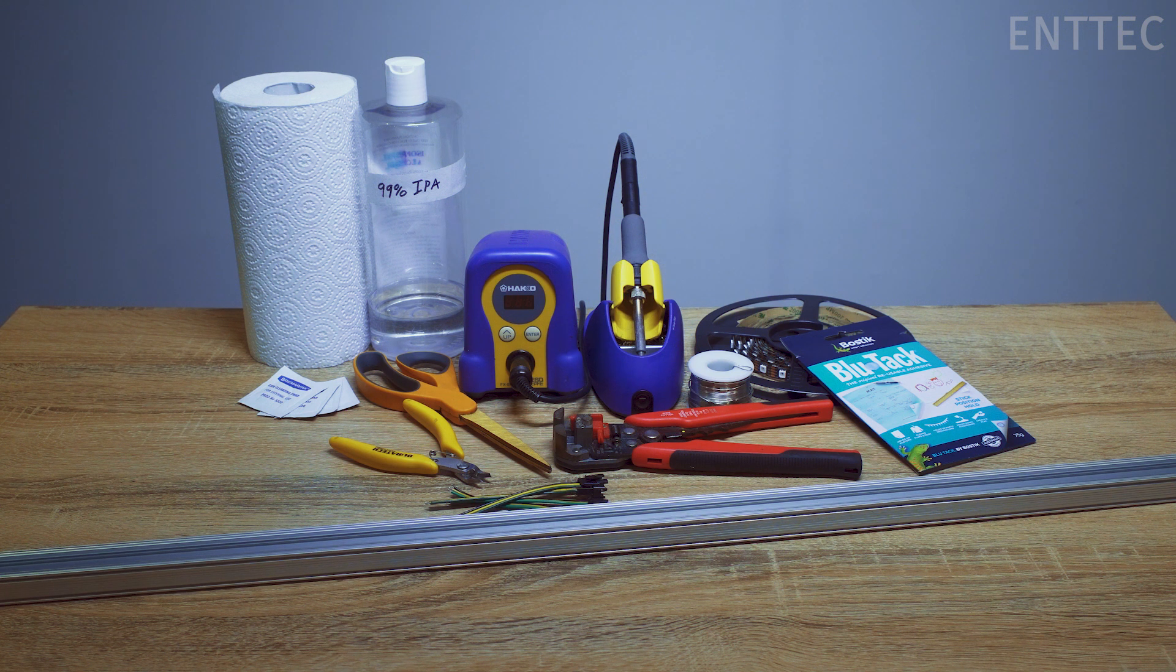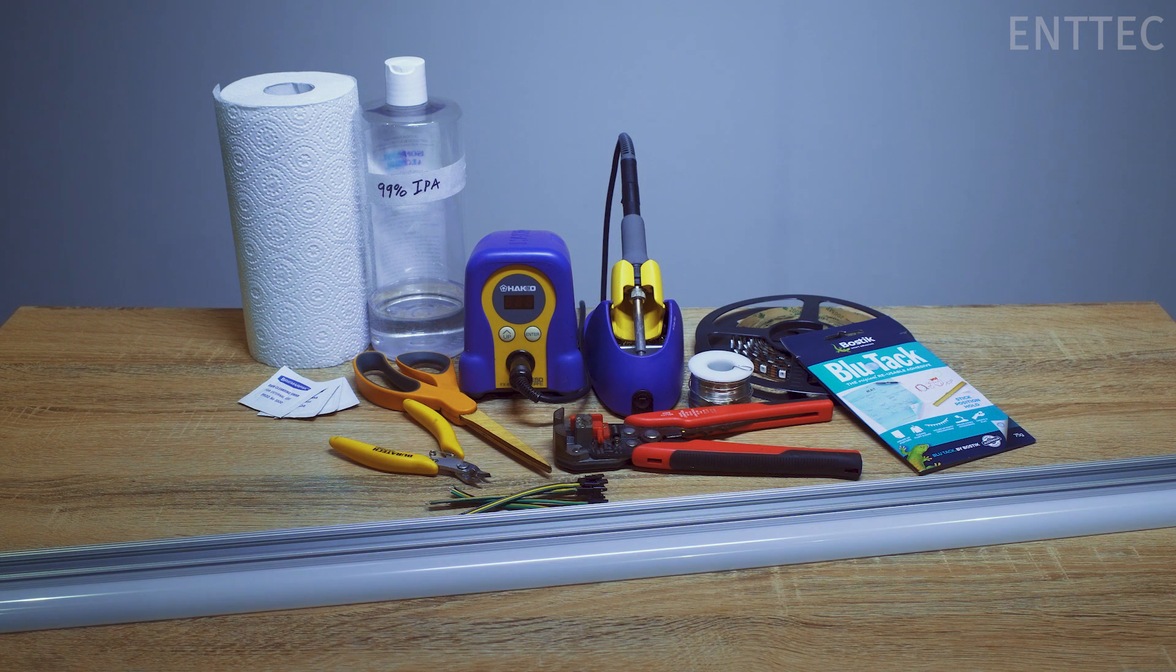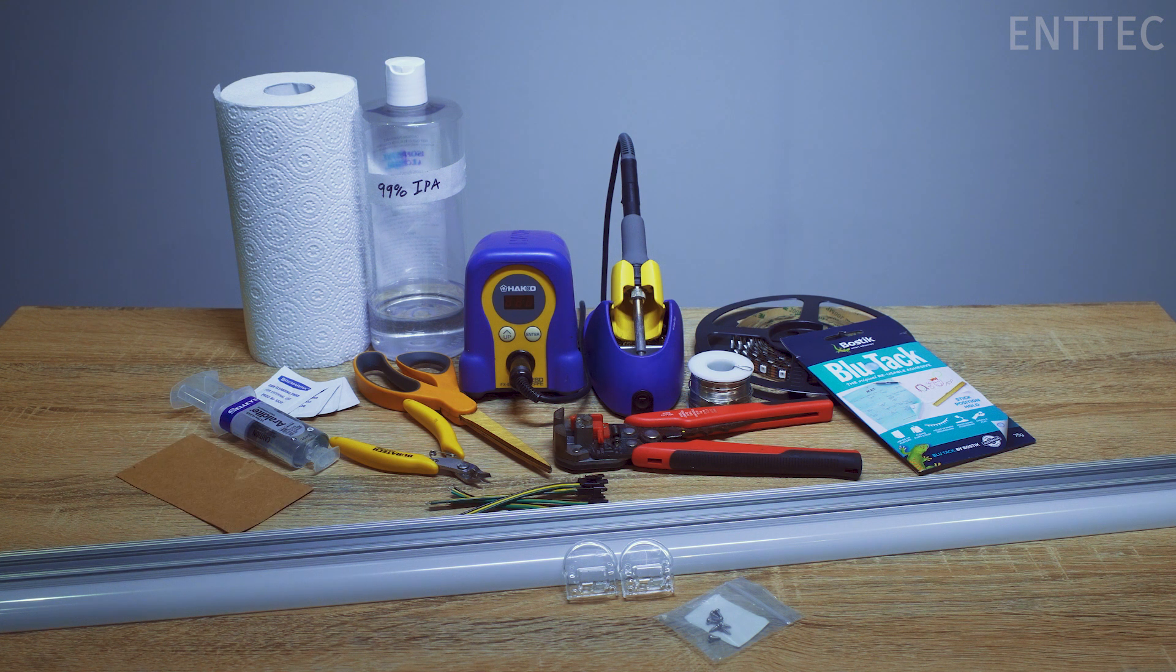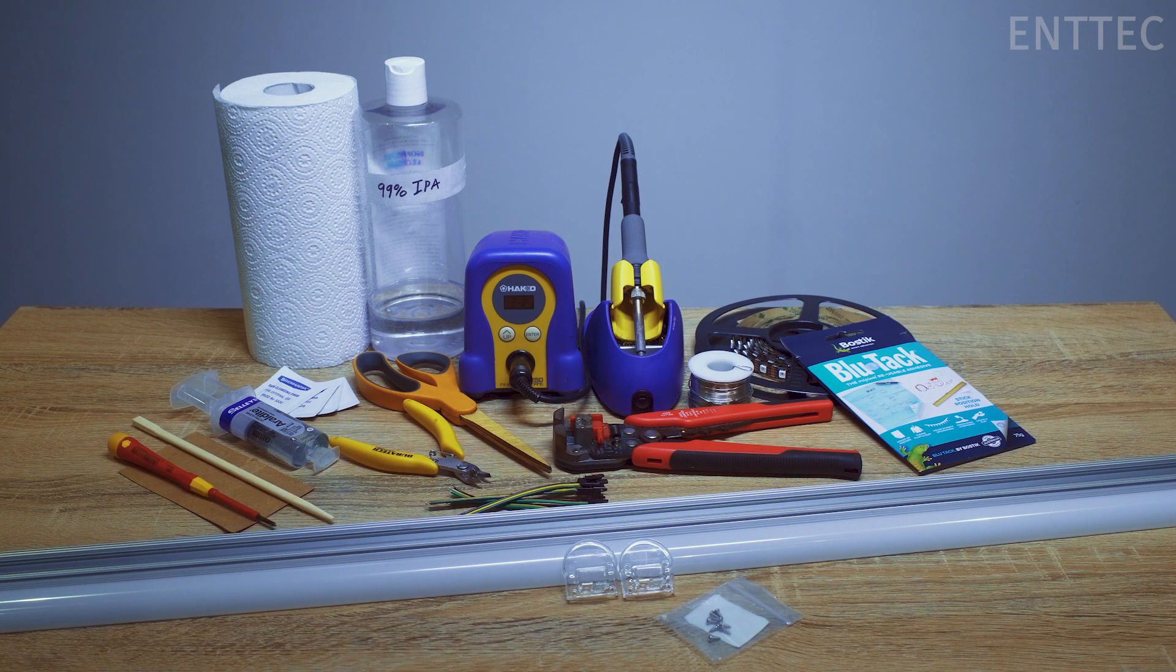a section of aluminium extrusion, today we'll be using one metre of our 8-ES extrusion with matched diffuser and end caps, some epoxy, some scrap cardboard, some disposable bamboo chopsticks, a small Phillips head screwdriver and finally some tweezers.